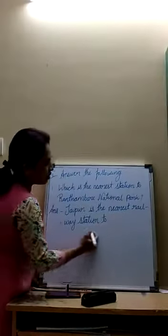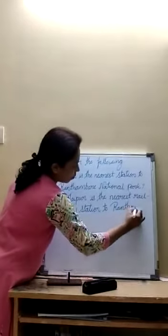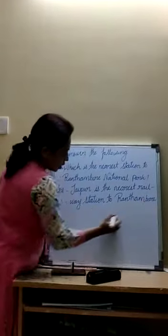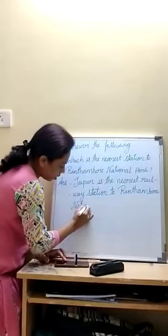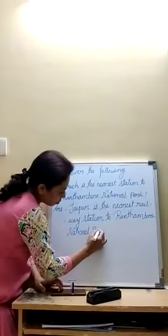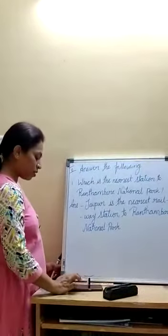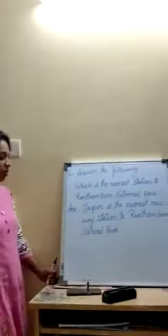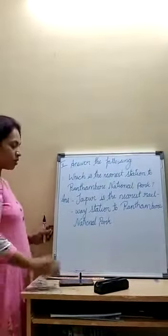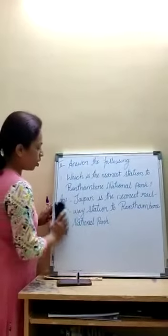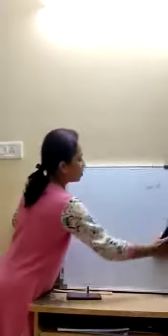So, the nearest railway station to Ranthambor National Park is Jaipur. Which is the nearest railway station? Jaipur is the nearest railway station for Ranthambor. Now, second question answer — there is no more space so I will erase it.